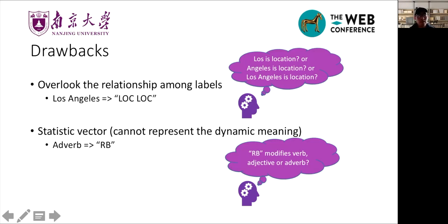Another flaw is that it identifies each linguistic feature with a static vector, so it cannot capture the dynamic meaning of labels. For example, RB denotes adverb. All the RB in the lookup embeddings are the same because of the static vectors. But RB labels can not only modify a verb but also an adjective or another adverb.